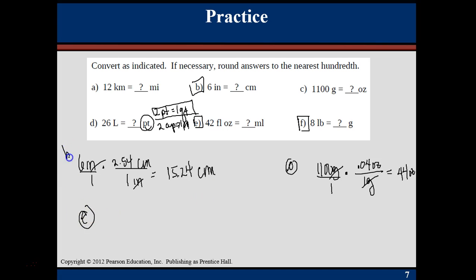Down to e. I have 42 fluid ounces, and I want to go to milliliters. If I want milliliters, that needs to come up top. It's the same as 1 fluid ounce, and I already have 42 fluid ounces. So I'm going to have a lot of milliliters. I'm going to have 42 times 29.57, 1,241.94, and that's in milliliters.